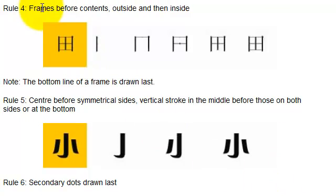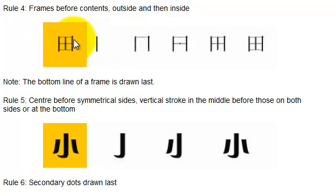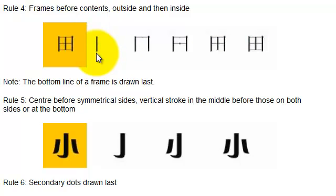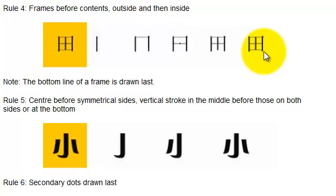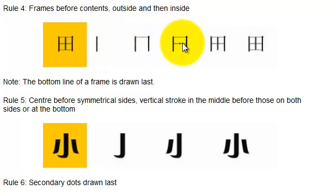Rule four: frames before contents — the outside is drawn first, then the inside. Here we have a character that looks like a square with a cross in it; it is a five-stroke character. First stroke, second stroke, third stroke, fourth stroke, fifth stroke. This character must be drawn in exactly this order.